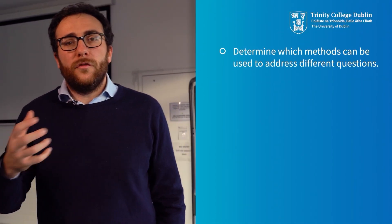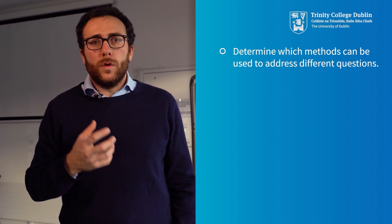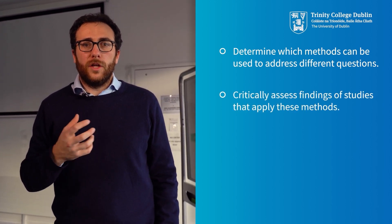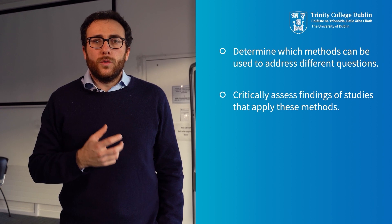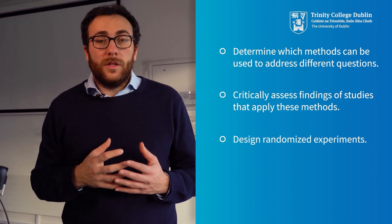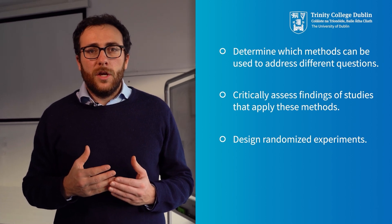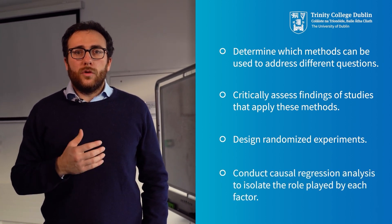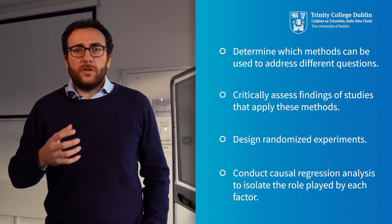On completion of this module, you will learn how different methods can be used to address different questions using different data sets. You will be able to assess the findings of the literature using these methods, and also design your own randomized experiment, which represents the gold standard in impact analysis. Finally, you will learn how to conduct causal regression to isolate each factor at play.